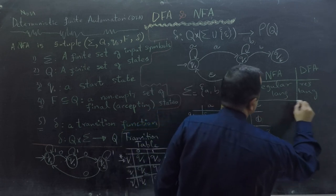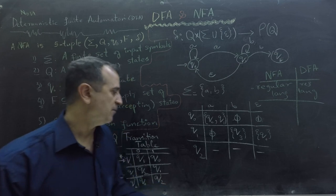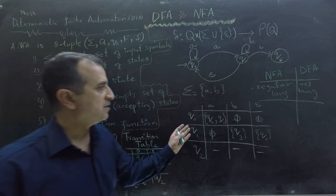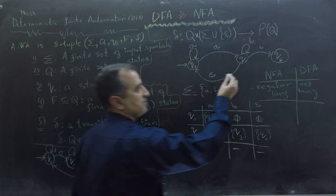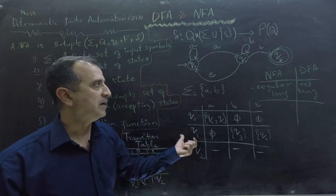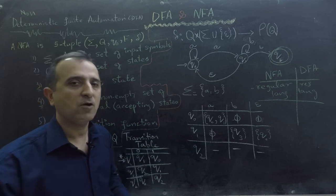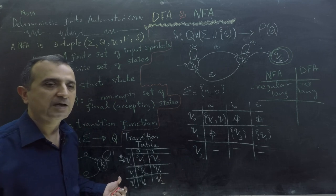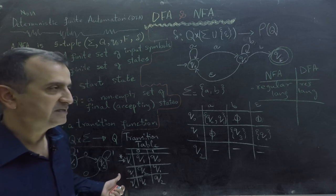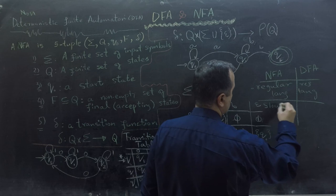Which one is faster for a computer to process? If I give my computer these two different transition tables, it will be able to process the DFA transition table much faster. In NFA, from input to the final state, we can have multiple paths from the start state using the same input — some of those paths might take us to the final state and some might not. In DFA, there is always a single path from the start state to the end state. So DFA is much faster for the computer to process as compared to NFA.